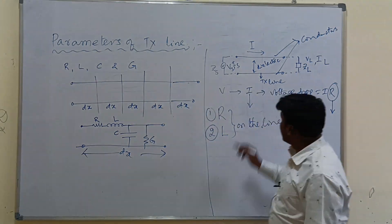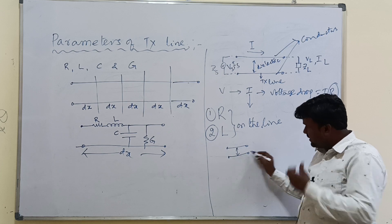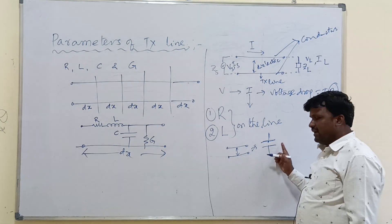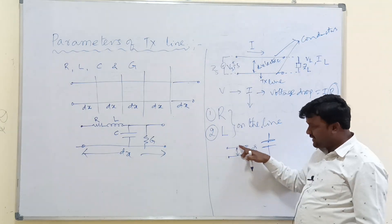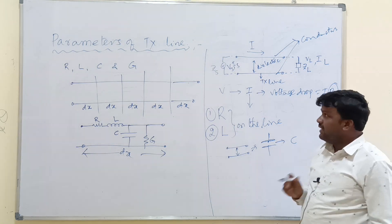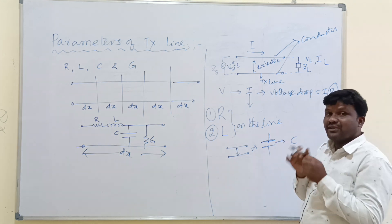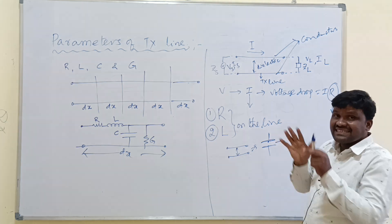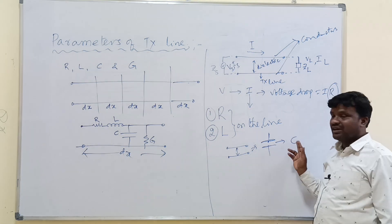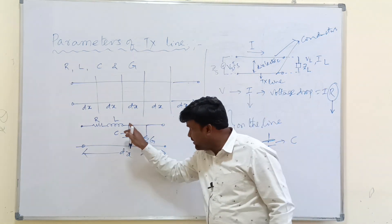Coming to C and G — the transmission line consists of two conductors separated by a dielectric medium, which is just like two parallel plates separated by a dielectric. There exists a property called capacitance between them. Also, due to the applied voltage, there exists an electric field — that is, voltage per unit distance, which is electric field intensity. As there exists electric field intensity, there exists electric energy. To store that electric energy, we require capacitance, which exists between the conductors of the line and is taken as a parallel element.